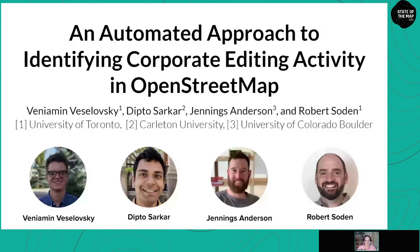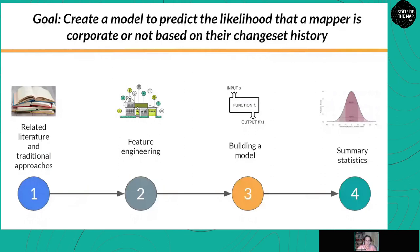Today I'm presenting our work titled 'An Automated Approach to Identifying Corporate Editing Activity in OpenStreetMap.' The goal of this research is to create a model that can predict the likelihood that a mapper is corporate or not based on their changeset history. This was motivated by the observation that corporate signatures are pretty distinct and unique. If we can extract differences between corporate and volunteer mappers, we can teach a computer to do the same. I'll cover related literature, feature engineering, the model and validation, and finally some summary statistics on corporate mapping in OpenStreetMap.